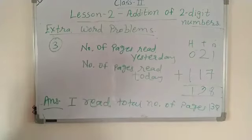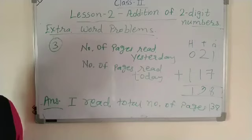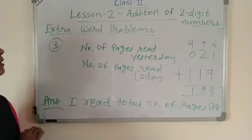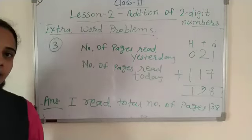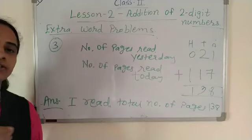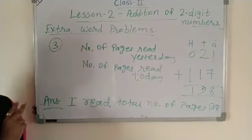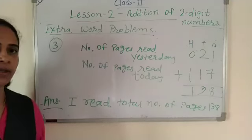Understood? In word problems, you have to read properly. Underline the important sentences, then solve the problem. This is the extra word problem practice sheet I already sent on 22nd June. Problems 2 and 3 are pending — try those on your own. Okay, goodbye.